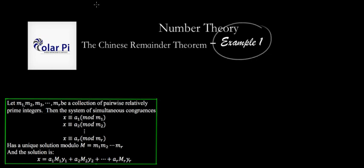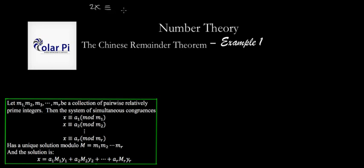There's also example two where we do a system of four equations. In this example, we're only going to do a system of two equations. The first equation is 2x ≡ 5 mod 7, and the second equation is 3x ≡ 4 mod 8.